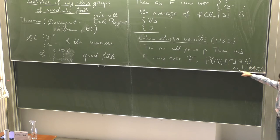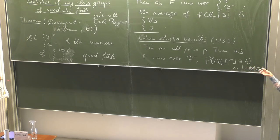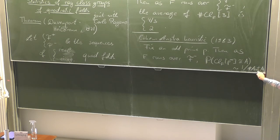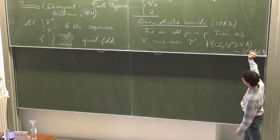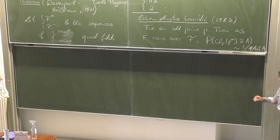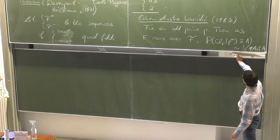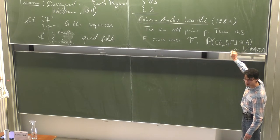If you want an equality here, you need some constant in front to ensure this is an actual probability distribution. Implicit in this is the claim that if you sum these weights over all isomorphism classes of finite abelian p-groups, that sum converges, and you can renormalize to make it equal to one. The constant is whatever it has to be to turn this into an actual probability distribution.